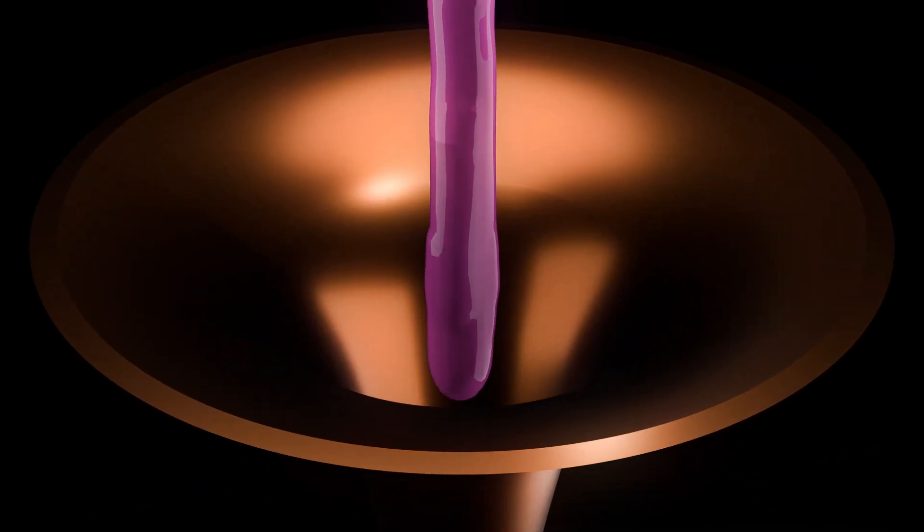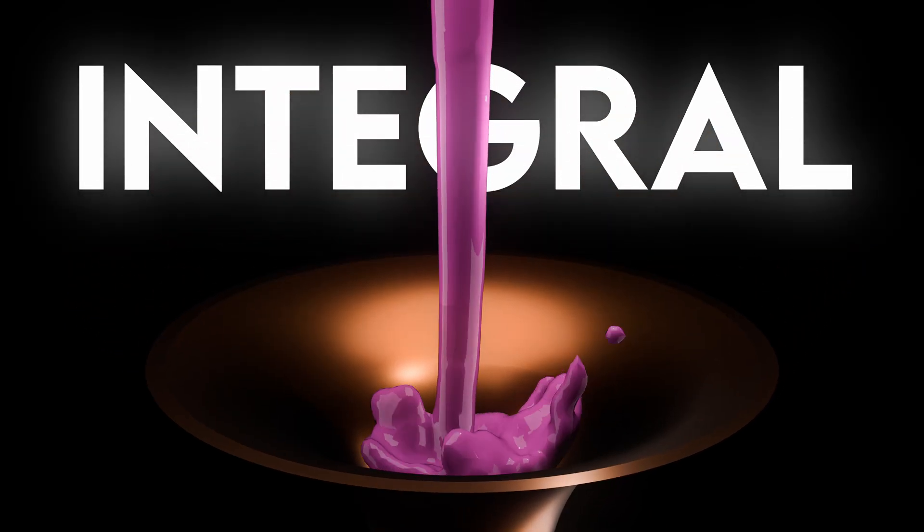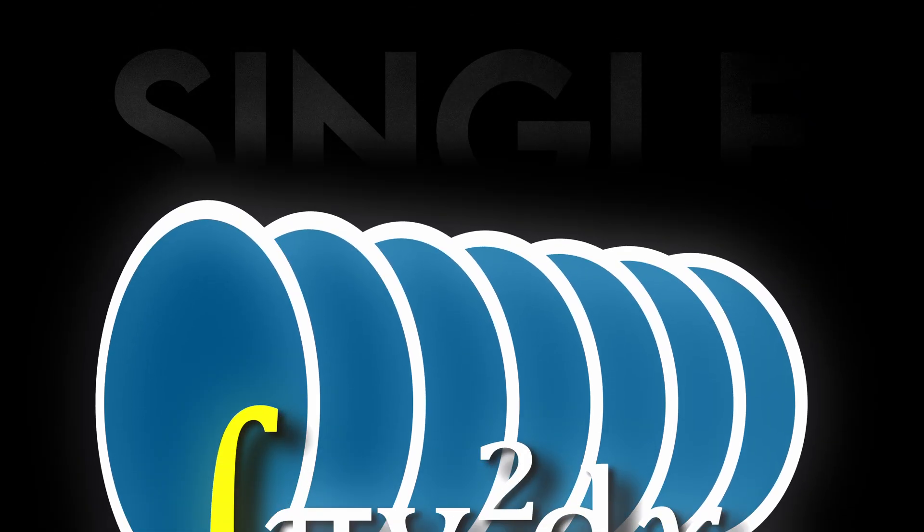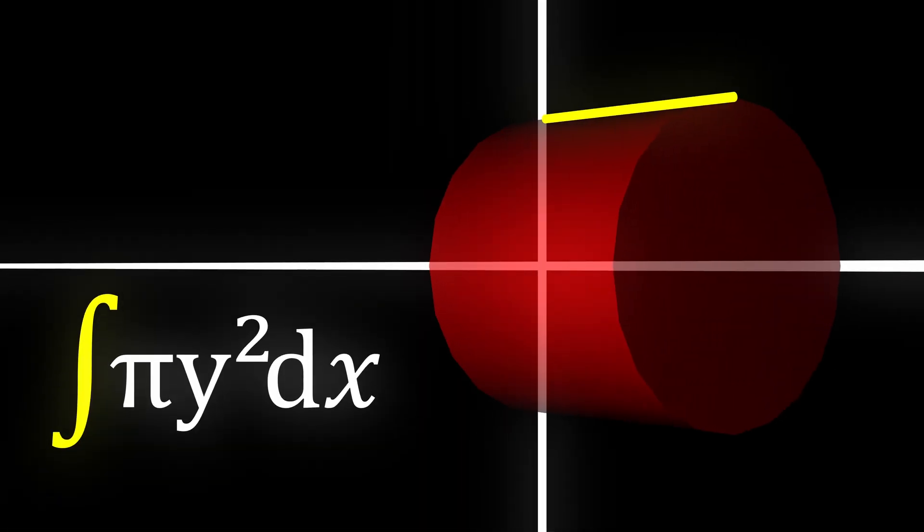The key to calculating the total volume, however, lies in the integral. The integral takes the infinitesimally small volumes of these countless cross-sections and transforms them into a single, manageable expression. This fundamental concept gives us the formula for solids of revolution, a powerful tool applicable to nearly any continuous function and its corresponding solid.